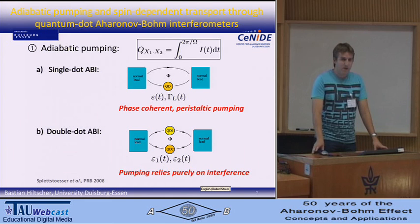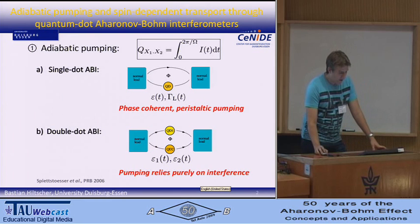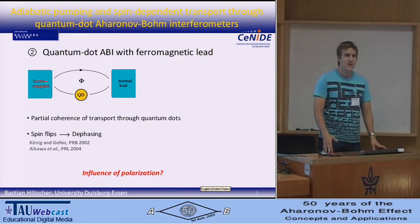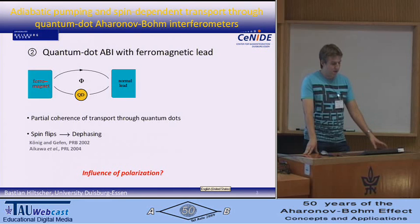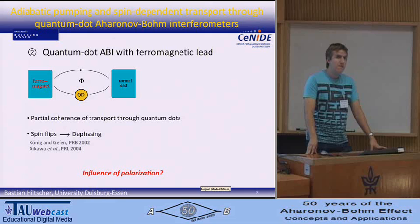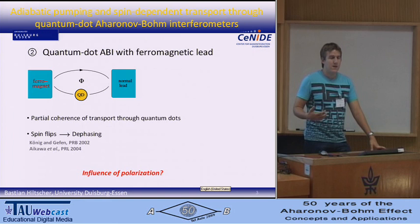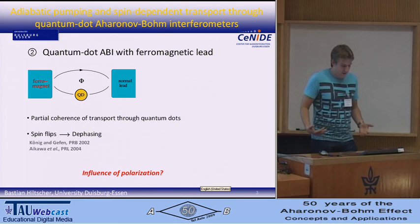That's all what I wanted to say about adiabatic pumping. Let me now tell you a little bit about a quantum dot Aharonov-Bohm interferometer with a ferromagnetic lead. As probably most or maybe all of you know, transport through quantum dots is at least partially coherent. One mechanism yielding dephasing is a spin flip, so the spin plays an important role for coherence. And so we asked the question: what is the influence of polarization on transport?